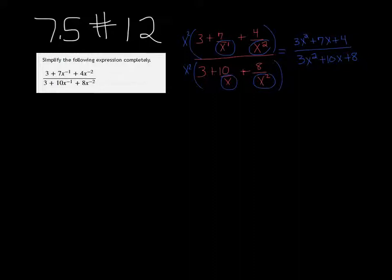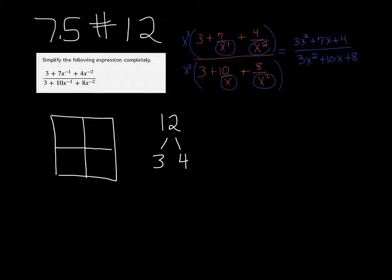So with 3x squared plus 7x plus 4, I'm going to use the box method, which is taught in MTE 6. And for this, you multiply the a and the c, which is 12, and then you need the factors of 12 that add up to 7. Those would be 3 and 4. So it's actually 12x squared, and then this would be 3x and 4x.